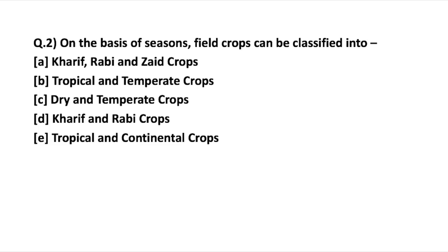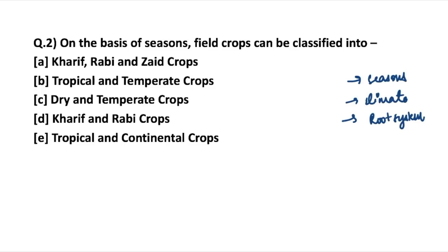The next question is: on the basis of seasons, how can field crops be classified? Field crops can be divided on the basis of seasons, climate, root system (tap root, fibrous root, dicot, monocot), life cycle of crops, or botanical similarities. Do not get confused between seasons and climate — they are different classification bases.